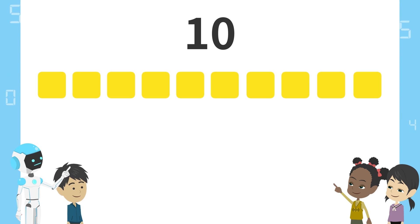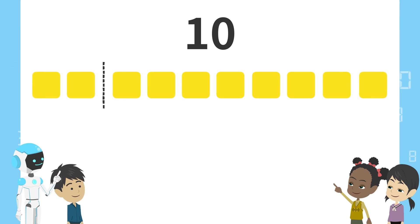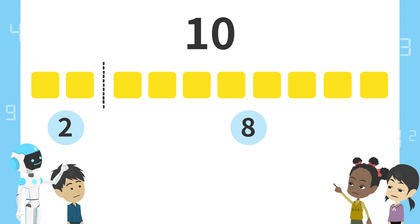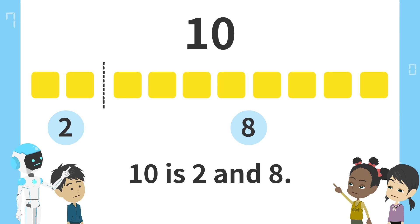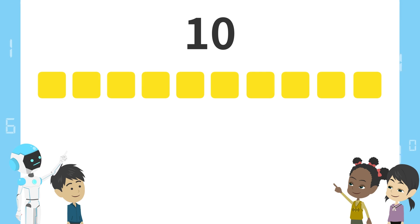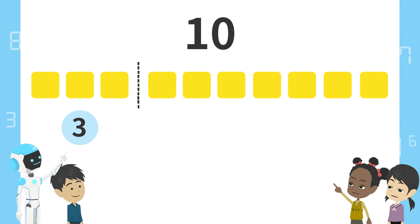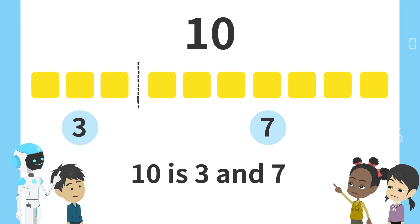Next, here. Two blocks on the left and eight blocks on the right. That means ten is two and eight. Right. Ten is two and eight. Next, here. Three blocks on the left and seven blocks on the right. Ten is three and seven.